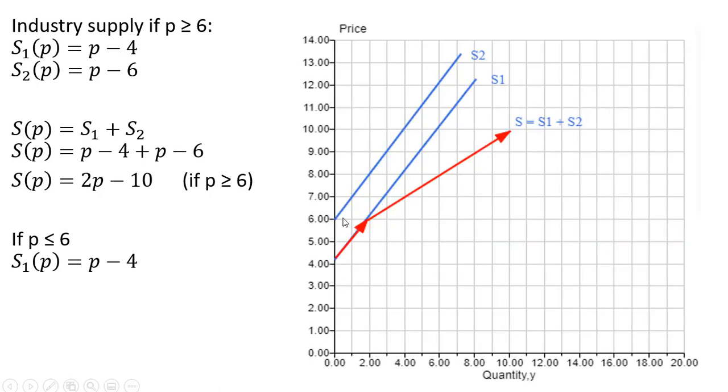Now to graph that, as before, we saw Firm 2's supply and Firm 1's supply. The kink here occurs at a price of $6.